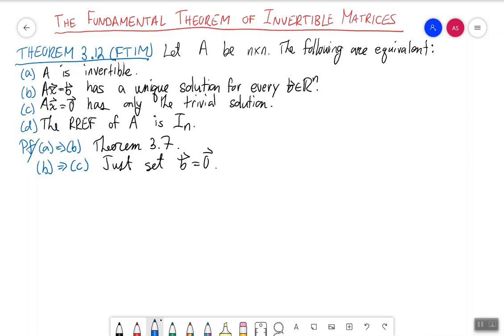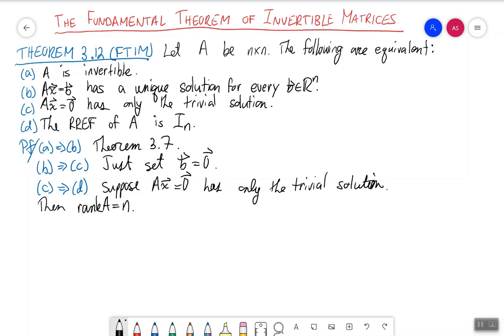The proof for C implies D is very interesting. Suppose AX = 0 has only the trivial solution. We're assuming that part C is true for our matrix A. That means that the rank of A is n. Therefore, by the definition of rank, the RREF of A must be the n by n identity matrix.